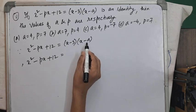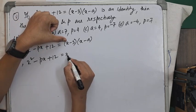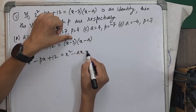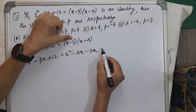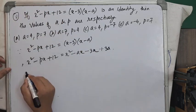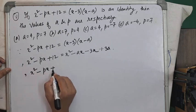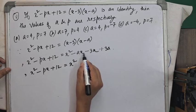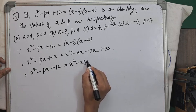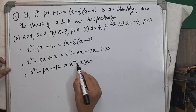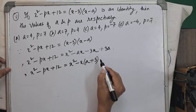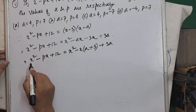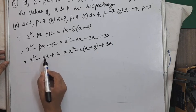Expanding the right side: (x-3)(x-a) = x² - ax - 3x + 3a = x² - (a+3)x + 3a. Now compare with the left side x² - px + 12.